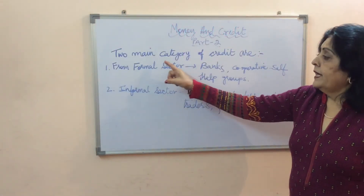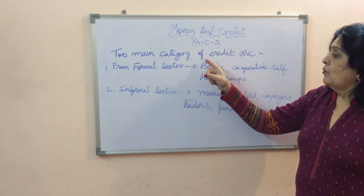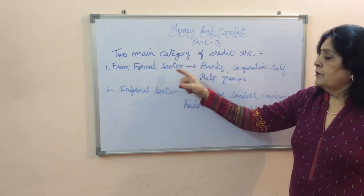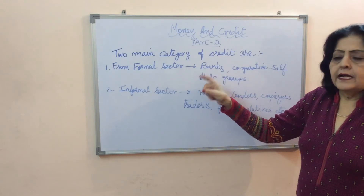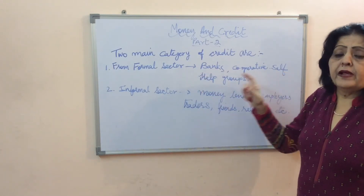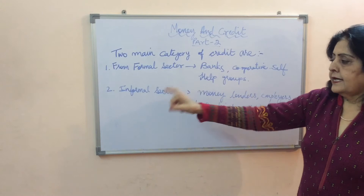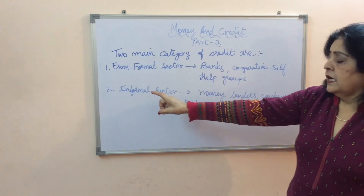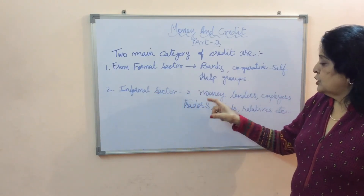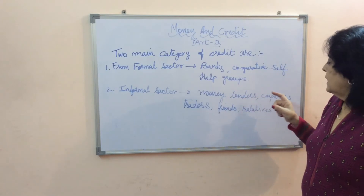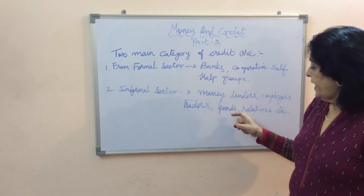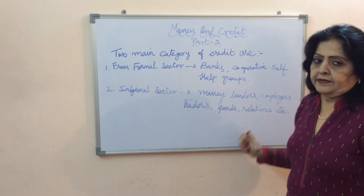Two main categories of credit are: from the formal sector, i.e., banks, cooperatives, and self-help groups; and the second is the informal sector, which includes money lenders, employers, traders, friends, relatives, etc.